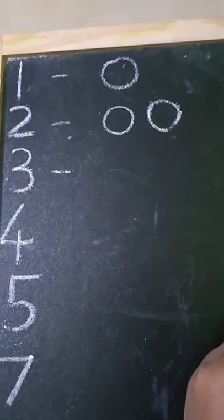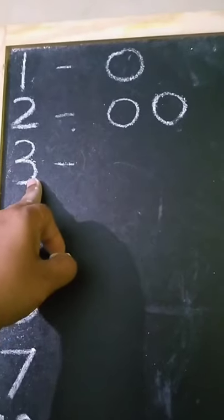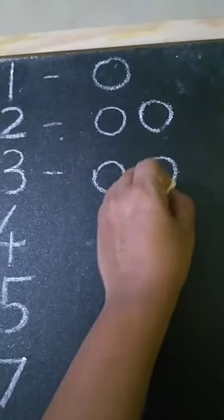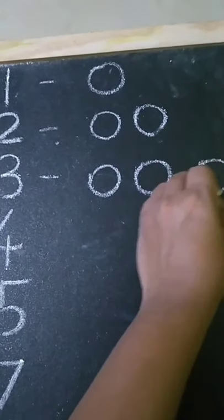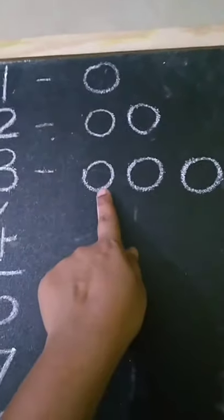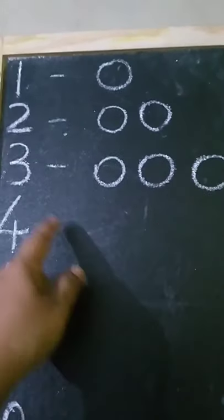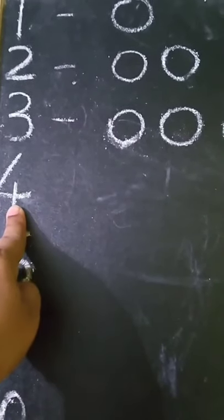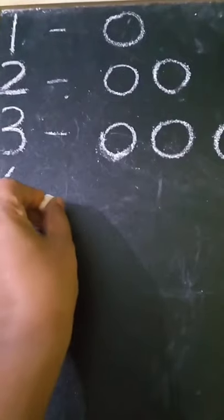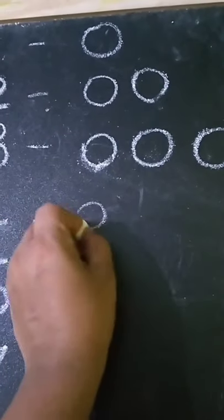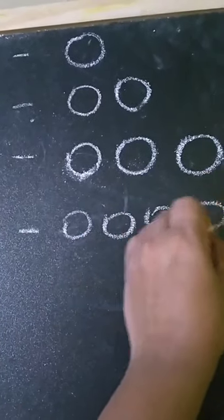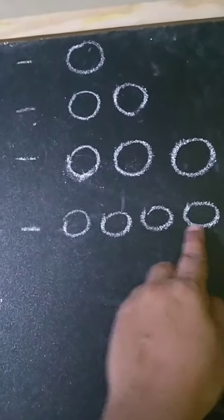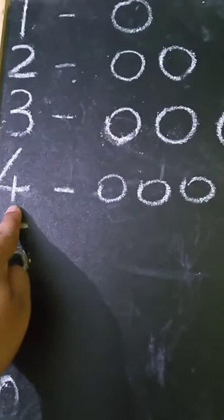Now we will draw how many circles? This is number 3. 1, 2, 3. Let's count: 1, 2, 3. So we have 3 circles. Now children, how many circles are we going to draw? 4. 1, 2, 3, 4. Let's count: 1, 2, 3, 4. There are 4 circles. And this is number 4.